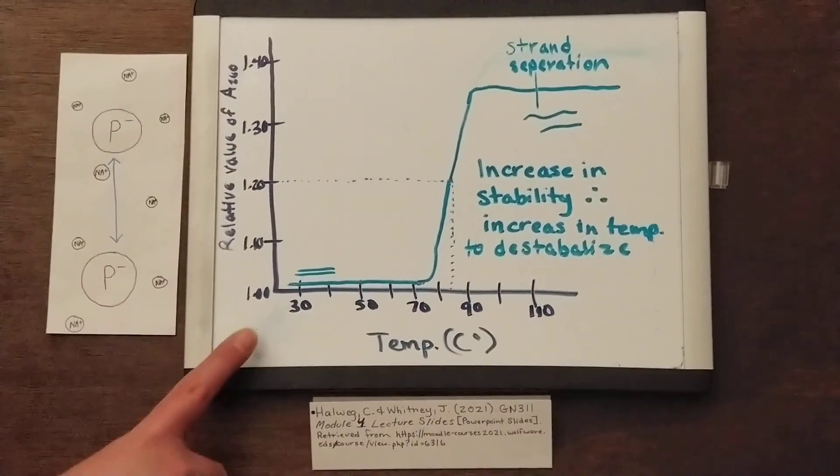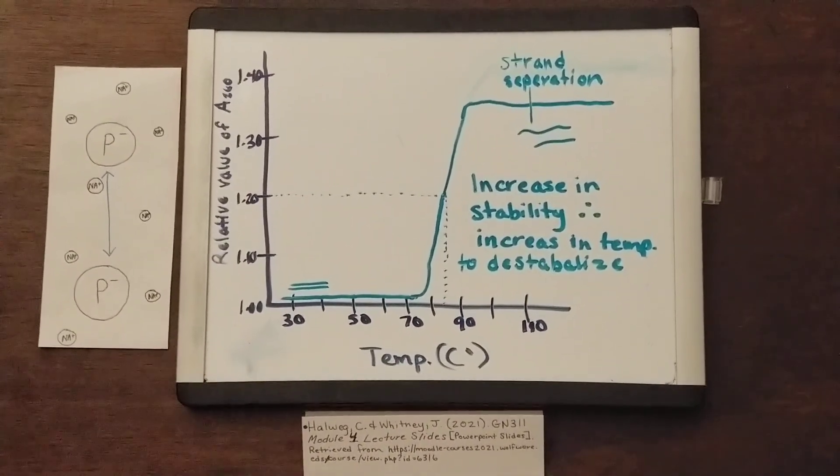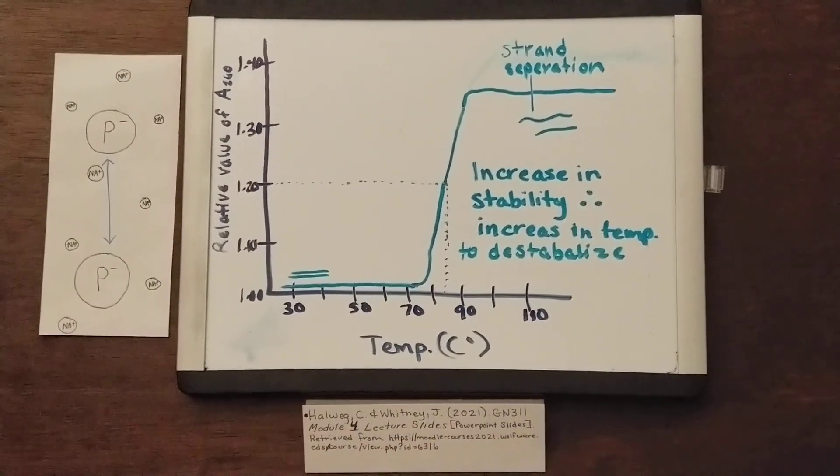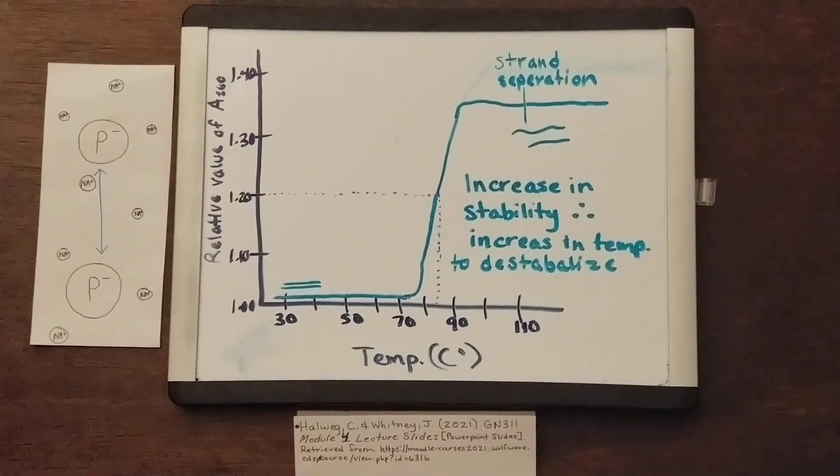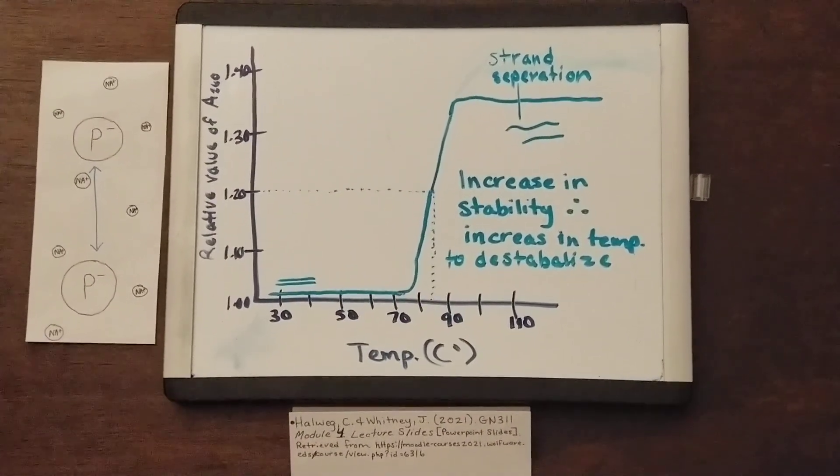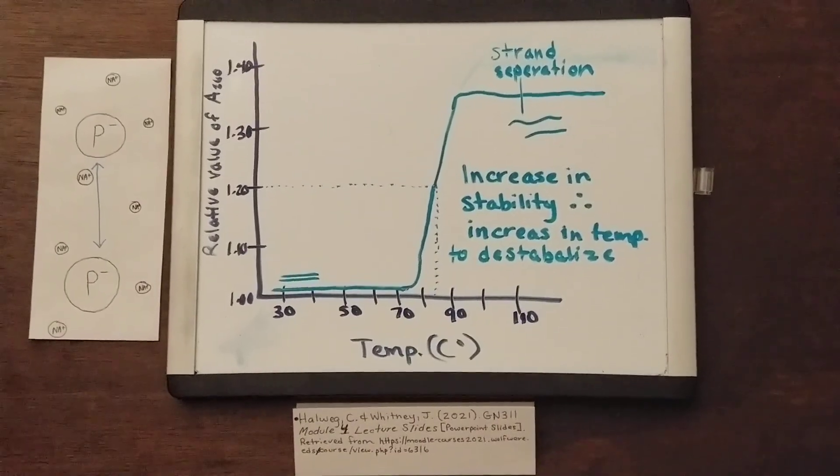When graphed on a melting point curve, Tm represents the midpoint of thermal denaturation. By adding the stabilizing solution of sodium, we can raise the midpoint. More heat would be needed to destabilize or denature the molecule, hydrogen bonds, and hydrophobic interactions.